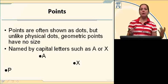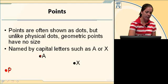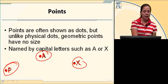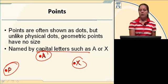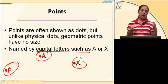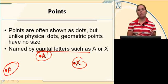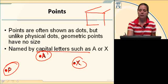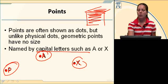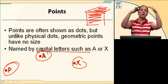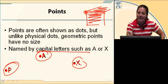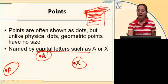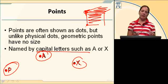Points are often shown as dots. For example, I have point P, point A, point X down here. When you name them, you use capital letters, such as A or X. Unlike those actual dots we draw, points have no thickness — they're basically no size whatsoever. They're just a location in space. If you look in that corner where the two walls meet with the ceiling, right at the very intersection of those three planes, that's a point.